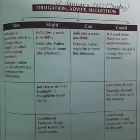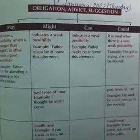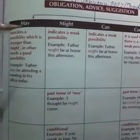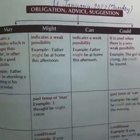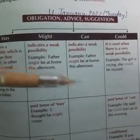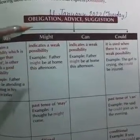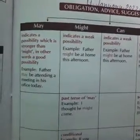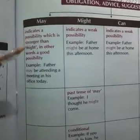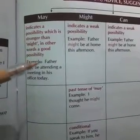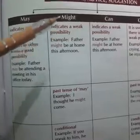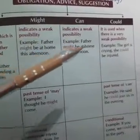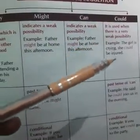In today's session we are going to study about the uses of may, might, can, and could. May, might, can, and could are used for obligations, advice, and suggestions. May indicates a possibility which is stronger than might. Might indicates a weak possibility, can indicates a very weak possibility, and could is used when there is also a weak possibility.